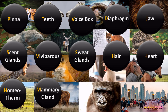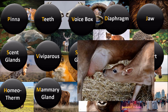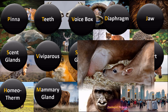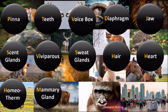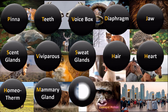The next feature is mammary glands, one of the most unique and important features of mammals. Mammary glands are present in the females of mammals and produce milk, which is used as food by young ones after birth.